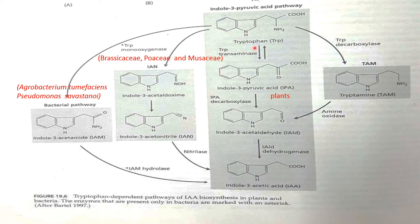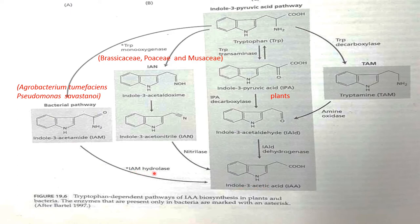Next, tryptophan can be converted into indole-3-acetamide in certain bacteria like Agrobacterium tumefaciens and Pseudomonas species. Tryptophan is converted into indole-3-acetamide with the help of the enzyme tryptophan monooxygenase. Later, this indole-3-acetamide is converted into indole-3-acetic acid with the help of the enzyme indole-3-acetamide hydrolase.